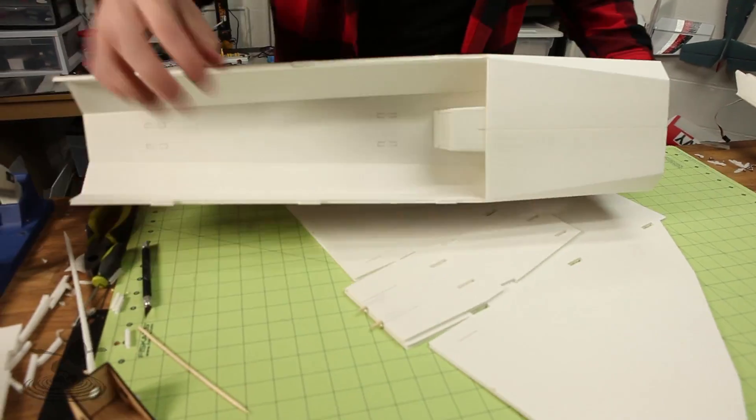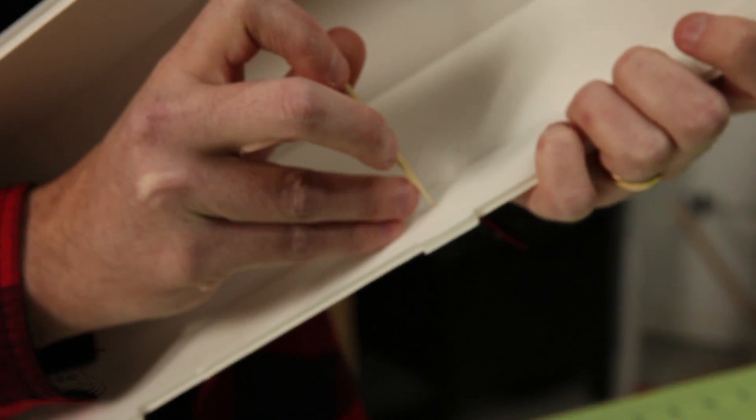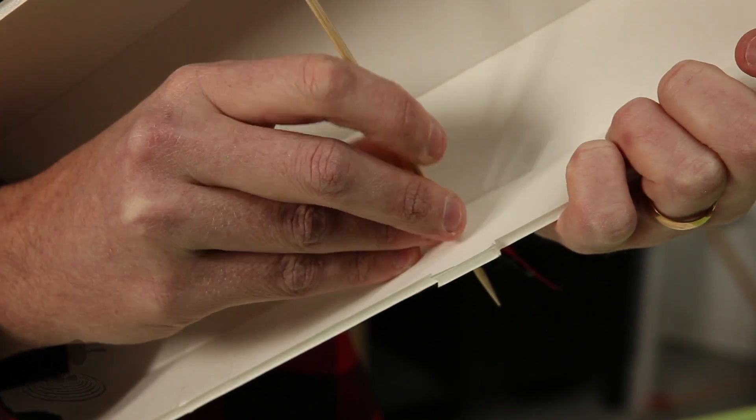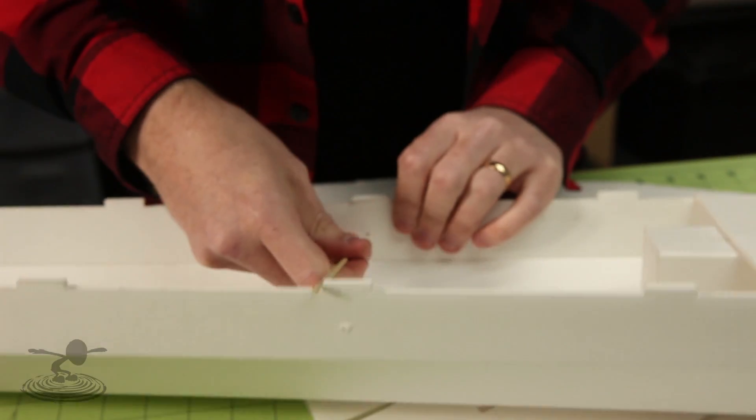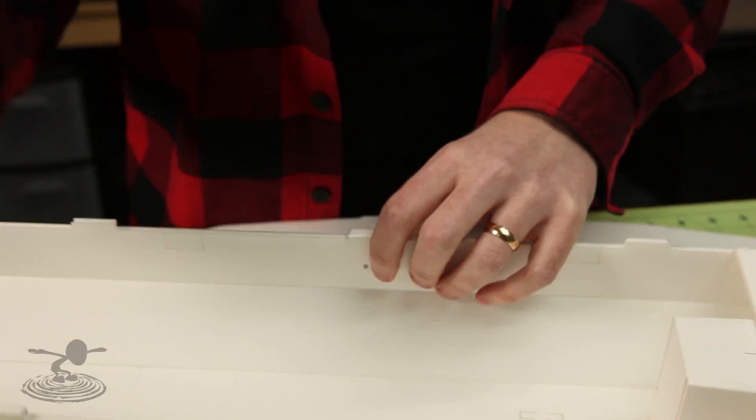There's one more step we need to do with the power pod, and that's in the main fuselage. There's two etched little circles here. We need to punch those out. This is where the barbecue skewer is going to go through and hold the power pod in place. Just poke that through both sides.